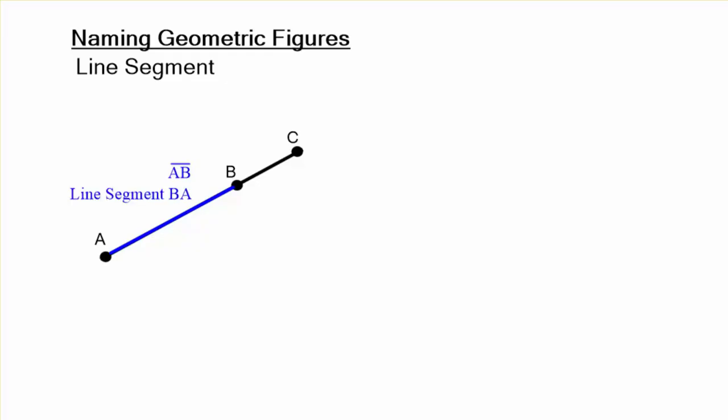And again, the order doesn't matter, so it could be BA, but you have to name it with those end points. Now that's going to be BC or CB, those two end points, or the whole line segment could be AC or CA. Just use the end points.